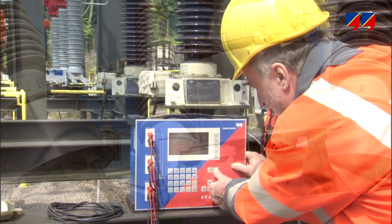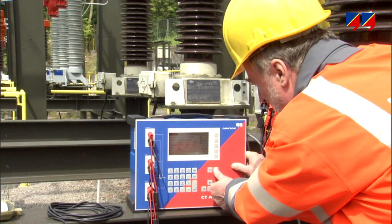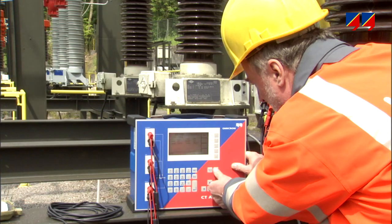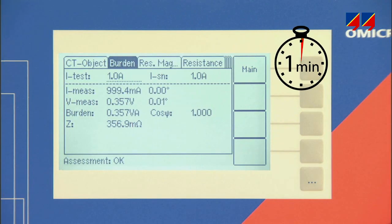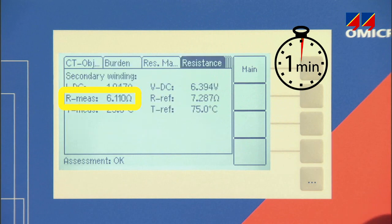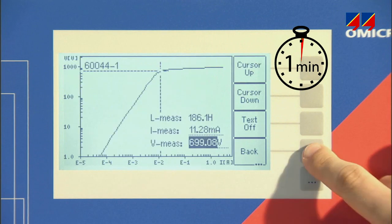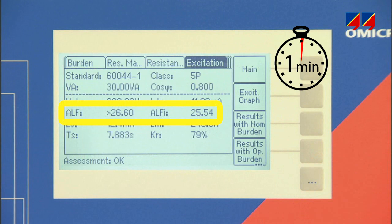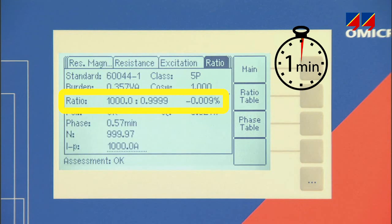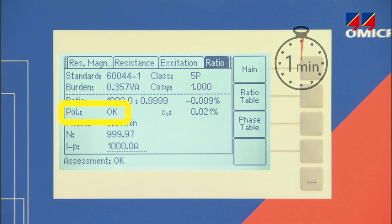CT Analyzer determines relevant CT data during a test duration of approximately one minute. It measures the burden of the secondary circuit, the winding resistance, and the excitation curve, calculates the accuracy limiting factor for rated and actual burden, determines its ratio, amplitude, and phase angle accuracy, and verifies the polarity.